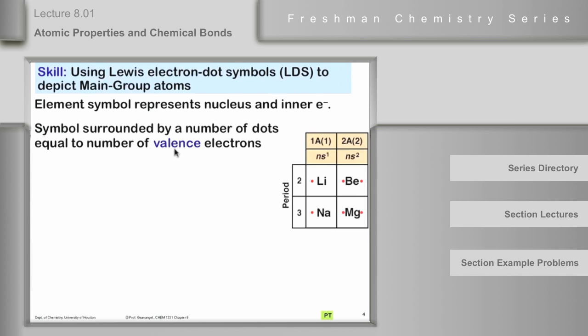So the electron configuration by itself is not always sufficient to predict what a Lewis dot structure is. So we need to keep in mind that the Lewis dot structure has two things in it. G.N. Lewis, when he invented the Lewis dot structure, had this in mind.